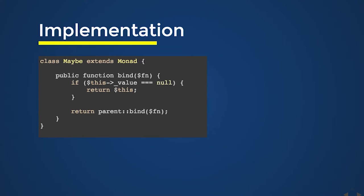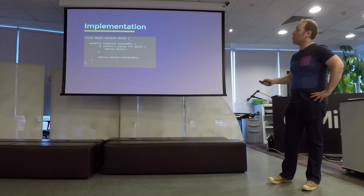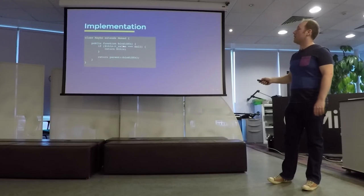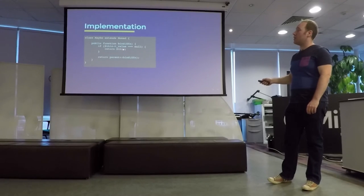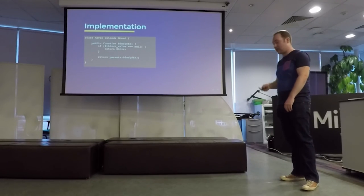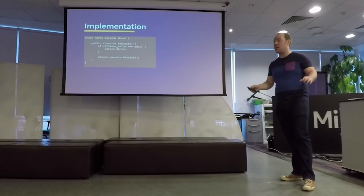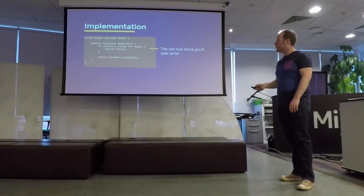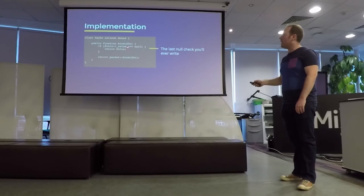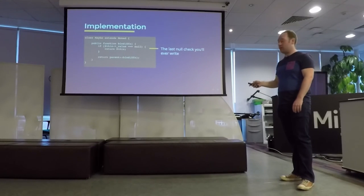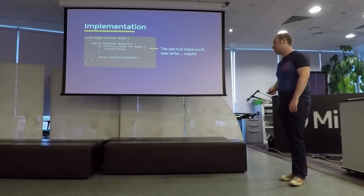The Maybe Monad can come to save us. We essentially just write a new Monad that extends our original identity Monad, and all we do is tweak the bind function. We take a look at our wrapped value — if it's null, just return the original Monad. If not, go ahead and call the existing bind implementation. And that's it. That null check there is the last null check you'll ever need to write — maybe.